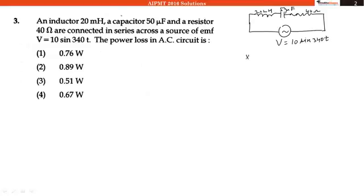First, we would like to find Xc, that is 1 upon ω C, and ω is 340. That is equal to 1 upon 340 into capacitance C is 50 μF, that is 10 to the power minus 6 F, and that is equal to 58.8 Ω.